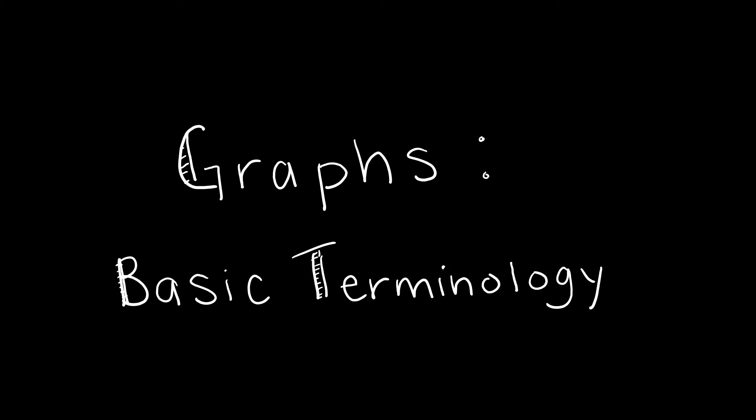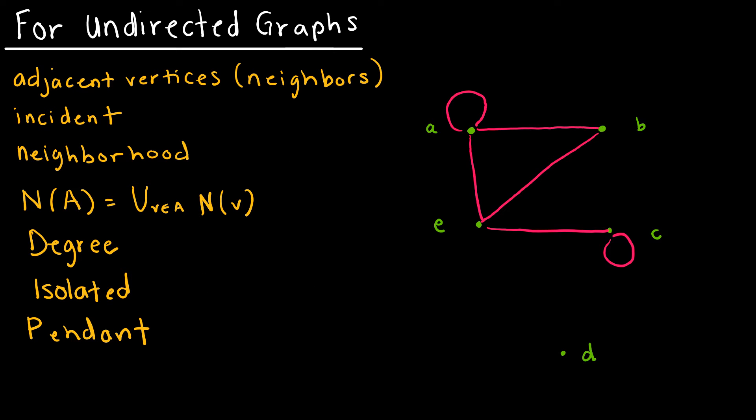Last week we learned a little bit about what graphs are. Now we're going to go in a little bit more detail about what types of graphs we might use, special types of graphs, and then we'll end our lesson today with trees. We're going to start by looking at some terminology that you need to understand, and this is specific to undirected graphs.